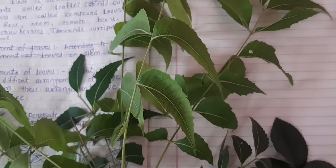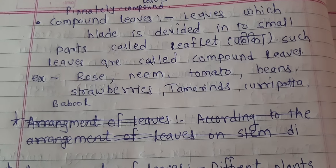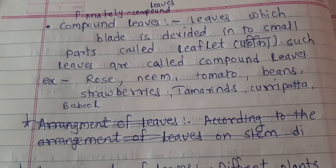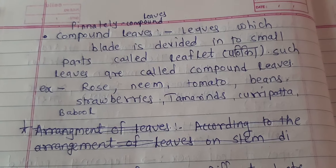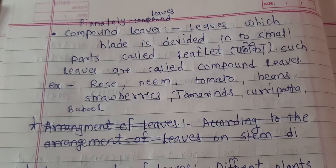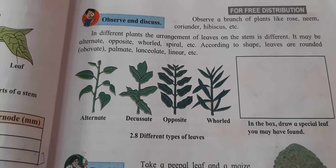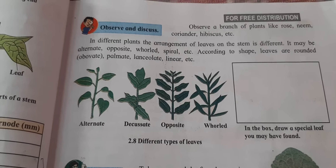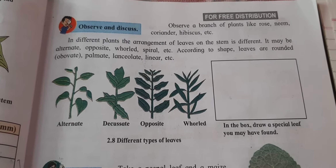Those are the two main types of leaves. We know that every plant has leaves of different shapes, different sizes, and different arrangements on the stem. According to the arrangements, plants are also classified into the following groups. The arrangement of leaves on the stem may be alternate, opposite, whorled, or spiral.